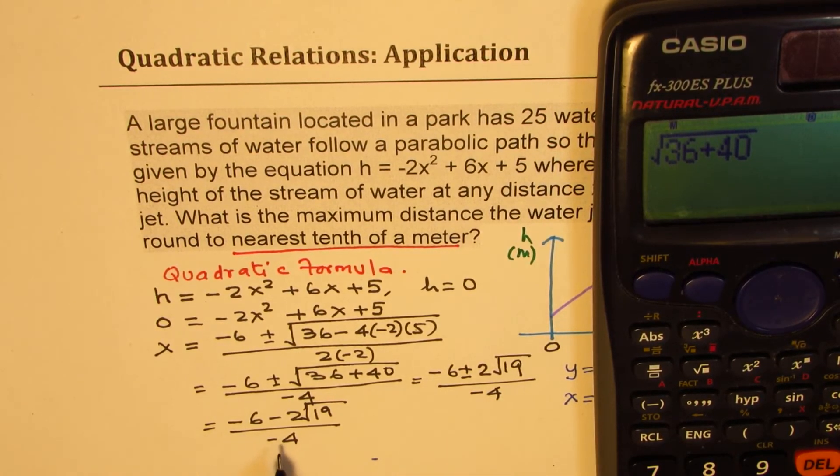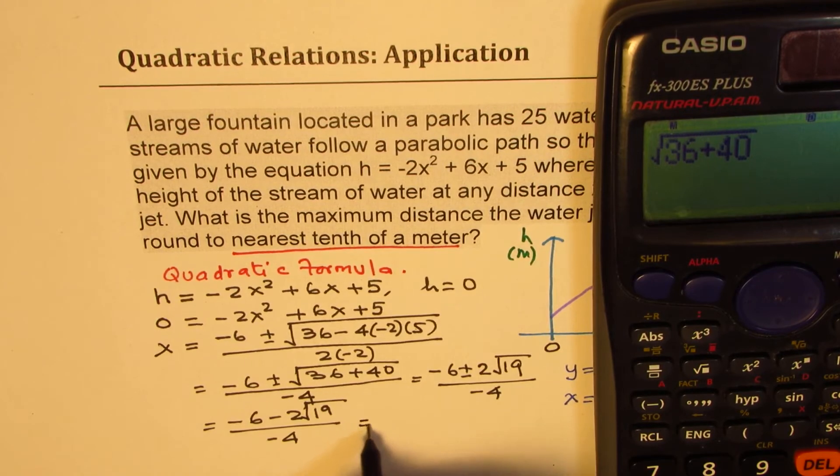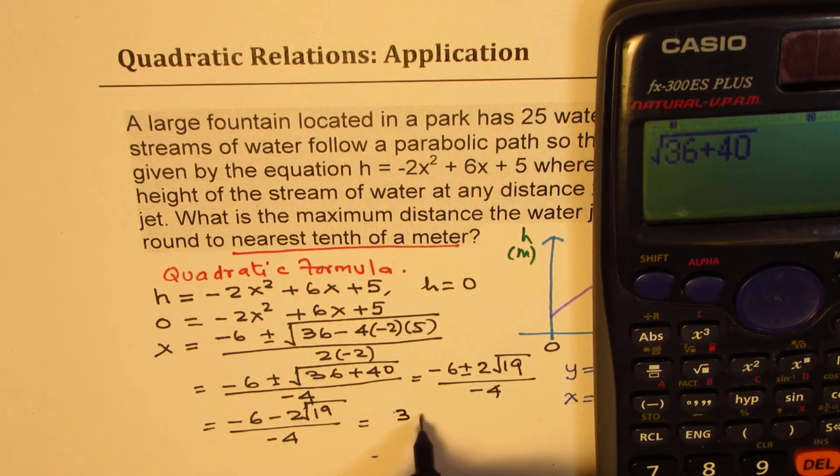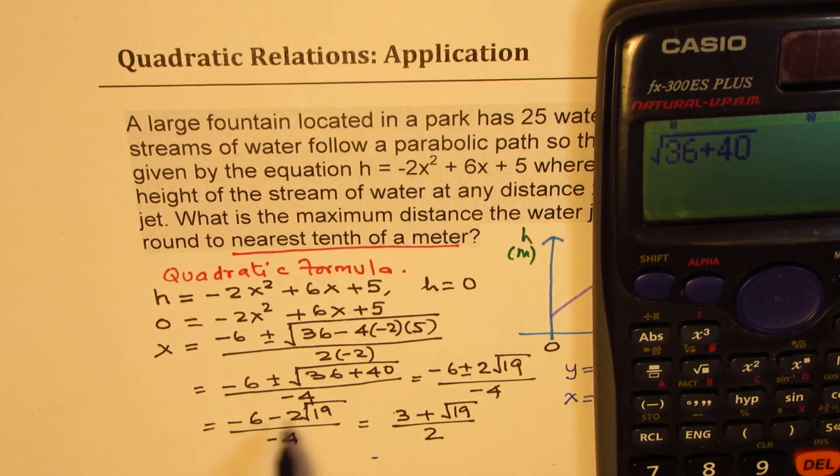So, basically, if you take minus common, then we get, or you can also divide by 2 if you want to. So you can also get this as 3 plus square root of 19 over 2. Dividing each by minus 2.